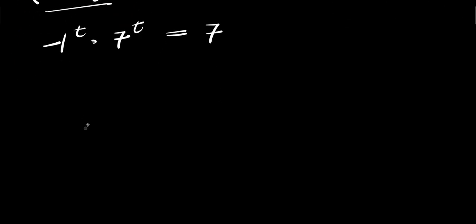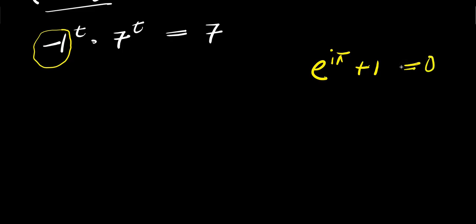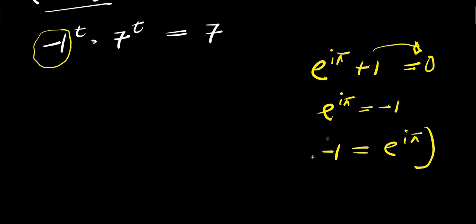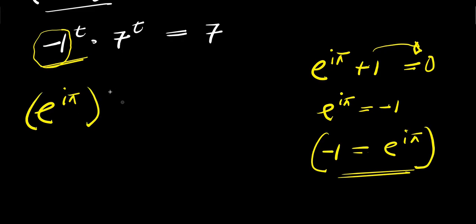So right here, what we are going to do will be to consider this identity. Now remember there is negative 1 here, so we need to remove this negative 1. We can make use of this identity: if you have e to the power of i times pi plus 1, this equals 0. So from here, I can move this 1 over, it becomes e to the power i times pi equals negative 1. So I can have it as negative 1 equals e to the power i times pi. So we are going to replace this negative 1 here with this, giving us e to the power i times pi, raised to the power of t, times 7 raised to the power of t equals 7.